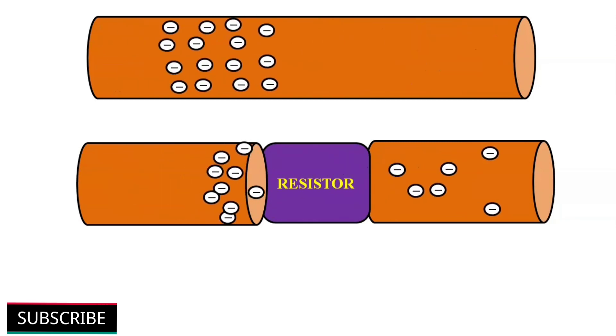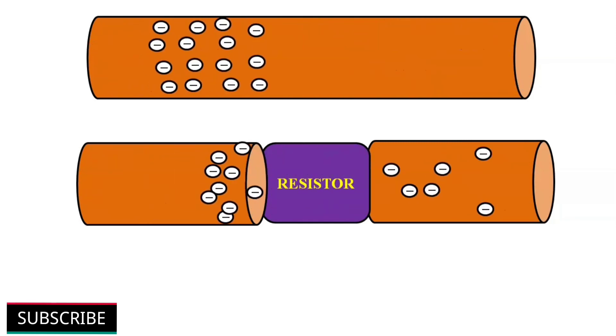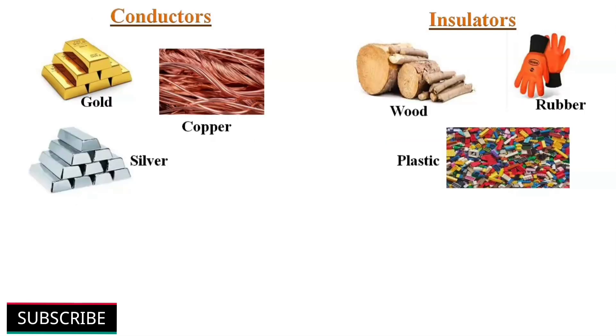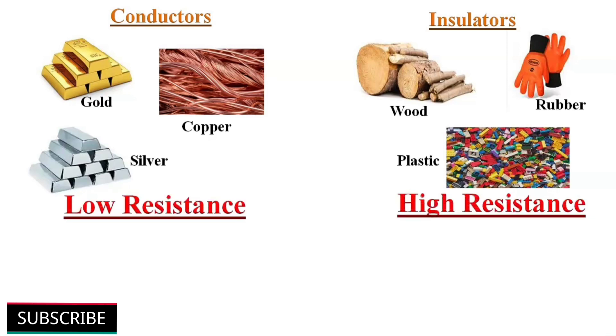This is the main function of resistor, to reduce flow of current in any particular portion of the circuit. We can classify all materials into two basic categories according to their electrical conductivity: conductors and insulators. In terms of resistance, we can say that conductors have low resistance, while insulators have much higher resistance.